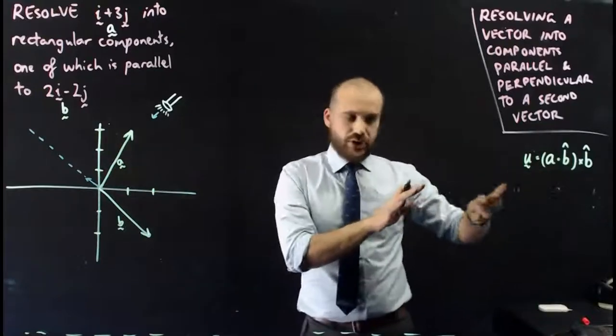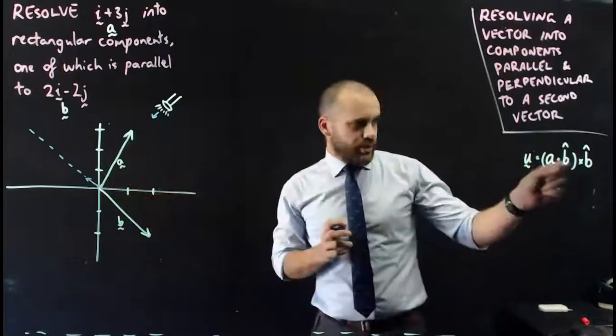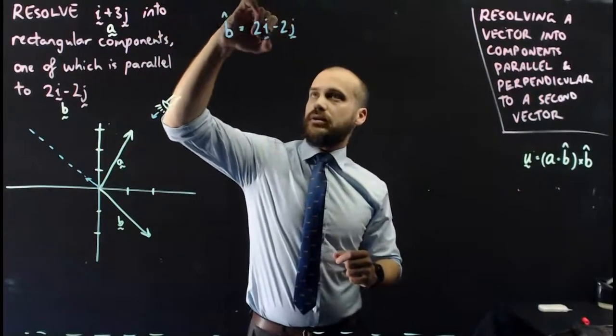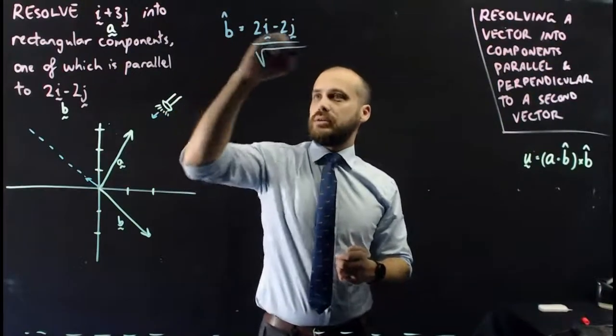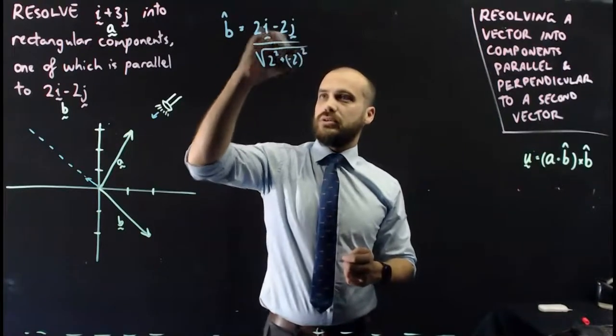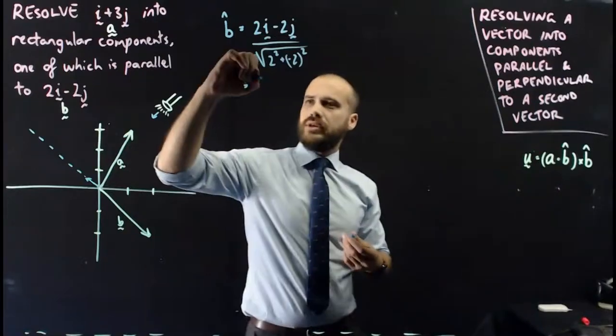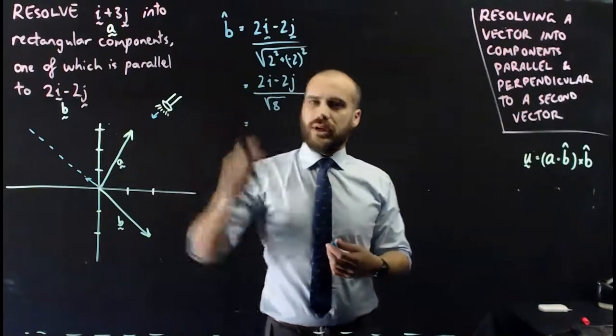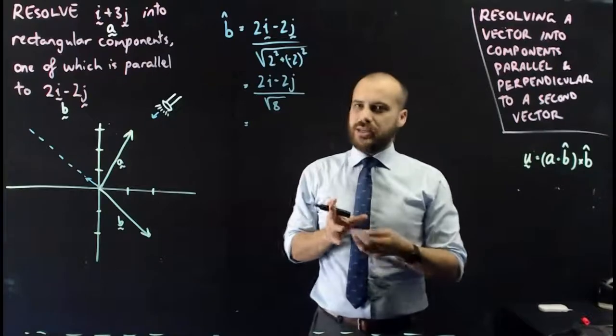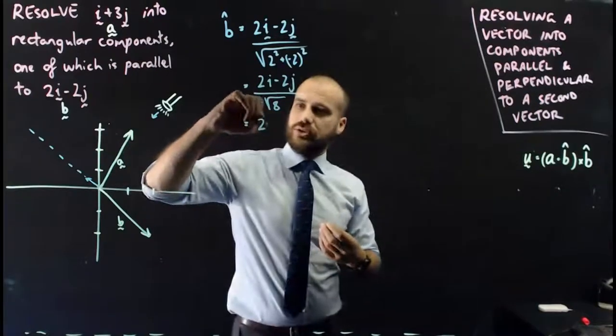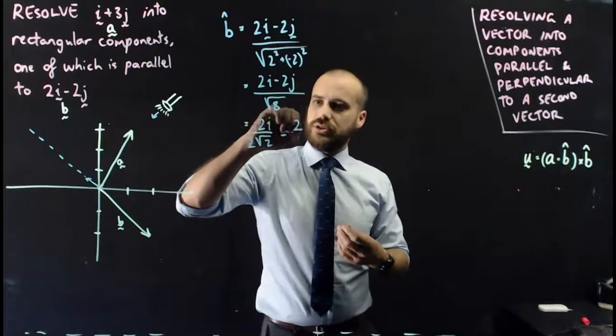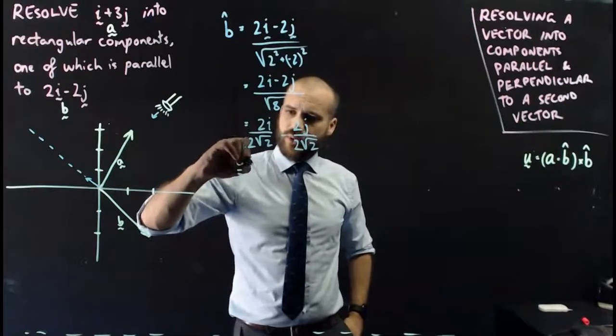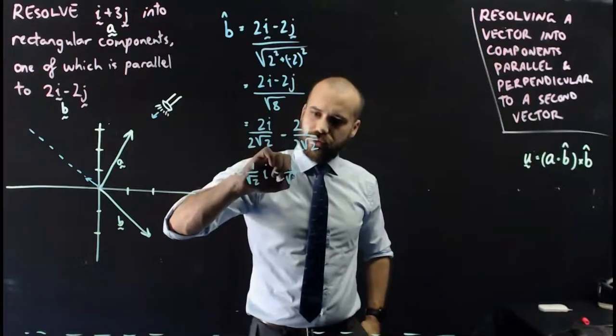We can use our vector projection formula to come up with what our vector projection is. And to do that, I'm going to need this guy here, my unit vector. So that's going to be the vector b over the magnitude of vector b. So that's 2 squared plus negative 2 squared. That's going to be 2i minus 2j over root 8, which can be made a little bit neater. Root 8 is the same as 2 root 2. So now I've got 2i over 2 root 2 minus 2j over 2 root 2. That gives me 1 over root 2 i minus 1 over root 2 j.